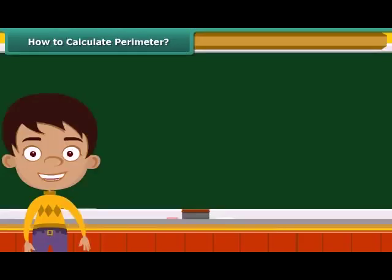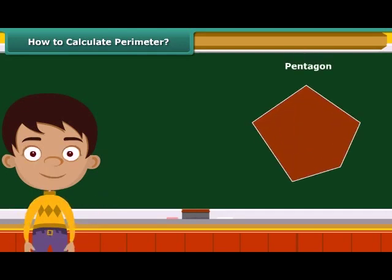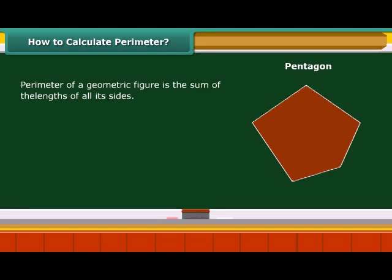Now that you have understood what perimeter stands for, let us try to calculate the perimeter of a pentagon. We have seen that the perimeter of a geometric figure is the sum of the lengths of its sides. A pentagon is a closed geometric figure of five sides.